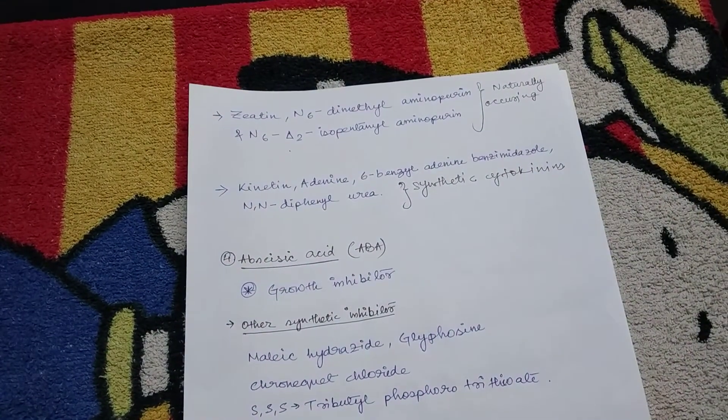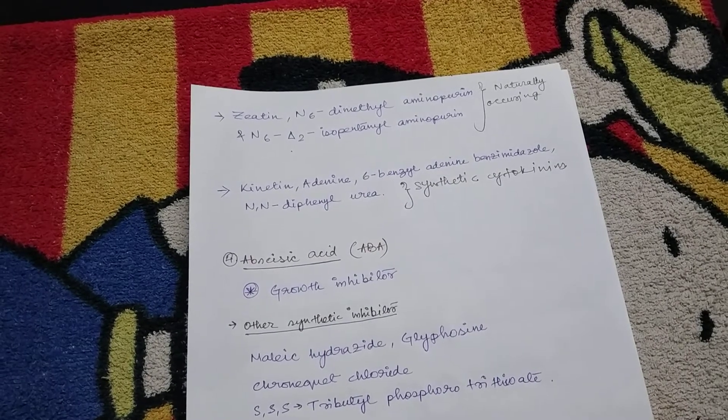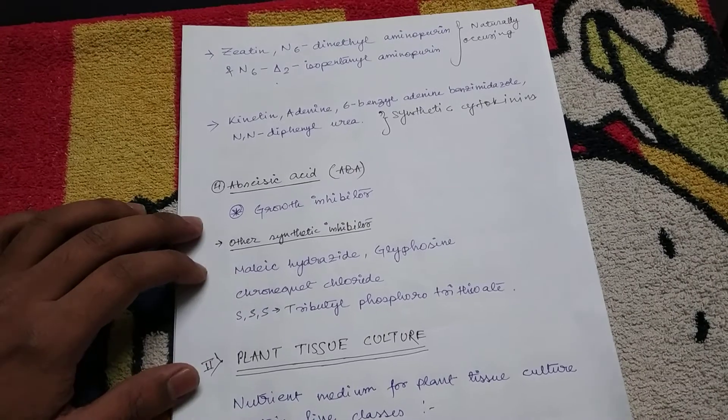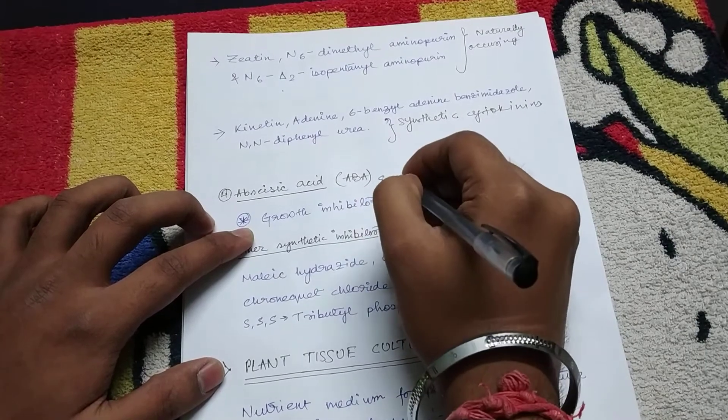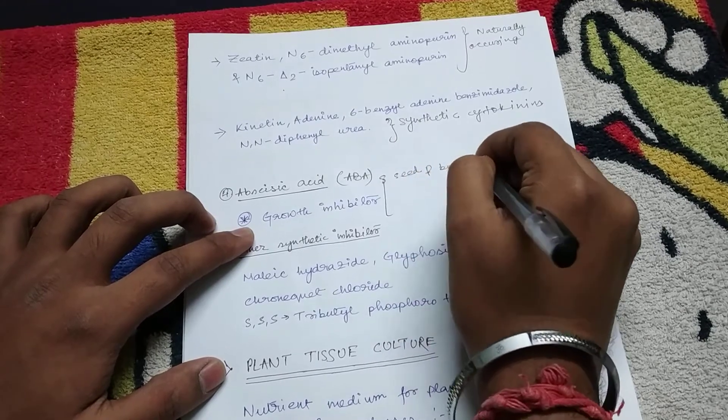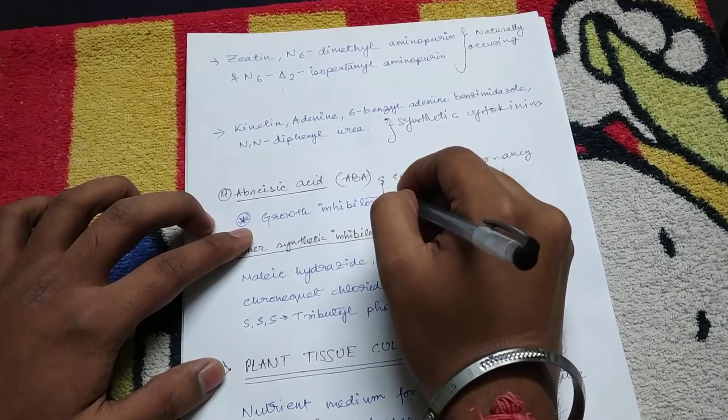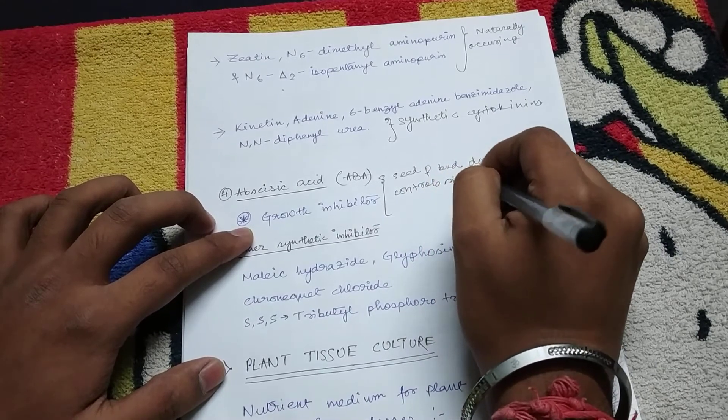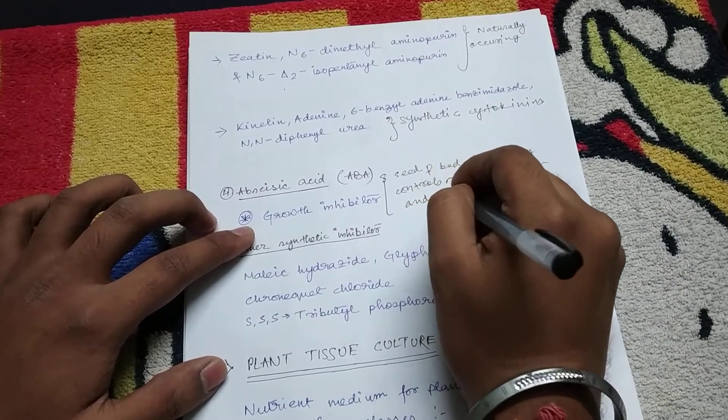Now the fourth plant growth regulator is abscisic acid. As the first three plant growth regulators were promoting the growth of the plant, abscisic acid is a growth inhibitor. The action of abscisic acid is that it helps in seed and bud dormancy. It also controls size of the organ and stomatal closure.